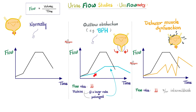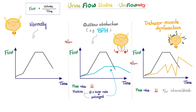In outflow obstruction, the flow rate is diminished, the rise is slower, and the plateau takes longer and occurs at a lower rate than normal — because an enlarged prostate is obstructing the urethral outlet. If the detrusor muscle is hyperactive, you'll see an intermittent pattern, which can appear with urge incontinence. If the detrusor is lazy (weak), you'll see decreased flow rates, similar to outflow obstruction. Of course, this is an oversimplification — real life is far more complex, and there is much more to urodynamic studies than this brief summary.